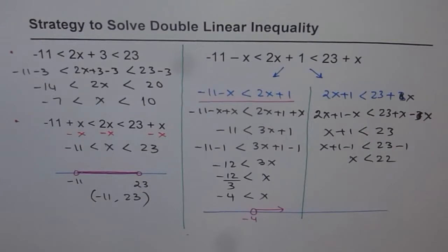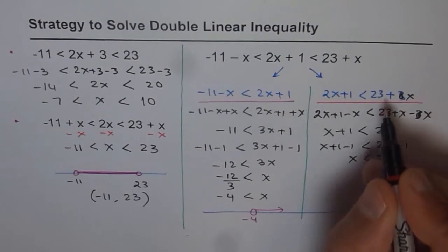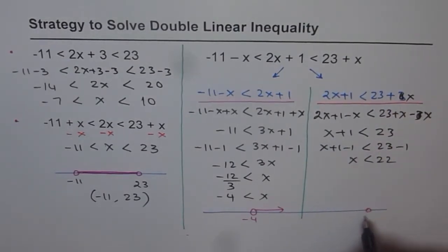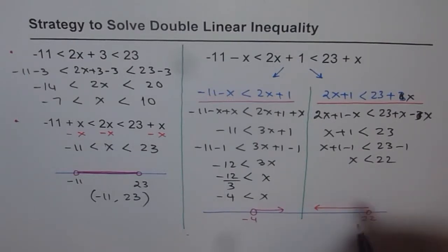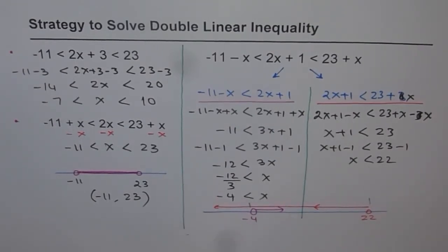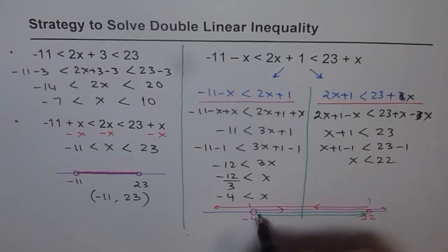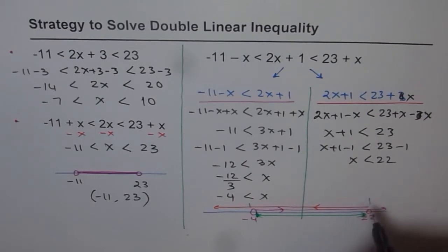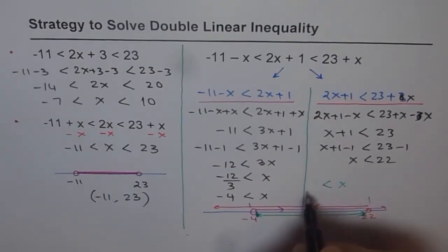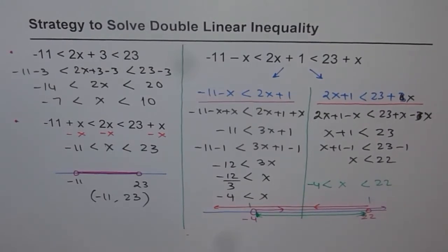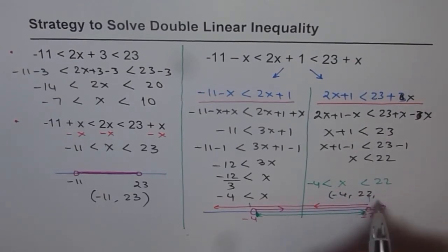What is overlapping between the two solutions? The first solution goes to the right from minus 4, and the second goes to the left from 22. The overlapping region is everything in between. So our final solution is: x is greater than minus 4 but less than 22, which can also be written as the interval from minus 4 to 22.